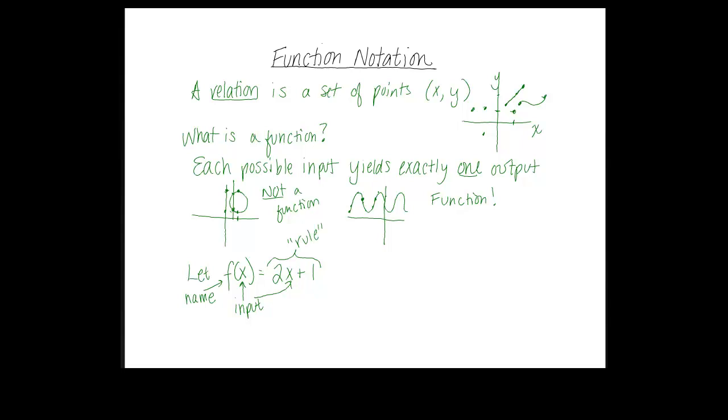And this 2x plus 1 business, that's our rule. That says what we do to our input. So you might have seen functions described as y equals 2x plus 1. That's just assigning a name for your output. You're calling it y. In this case, we're calling the output f of our input. It's allowing us to describe our outputs as a function of our inputs. It actually becomes really handy.